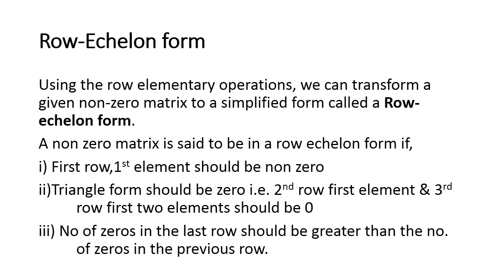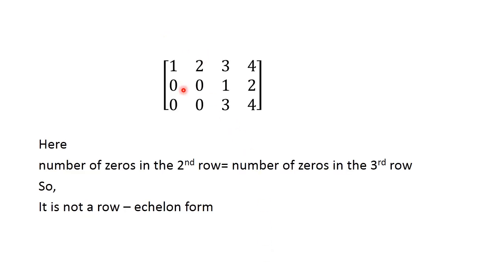See this example: the matrix [1, 2, 3, 4; 0, 0, 1, 2; 0, 0, 3, 4]. The first row first element is non-zero, so the first condition is satisfied. The second row first element is zero and the third row first two elements are zero, so the triangle form condition is satisfied. However, the number of zeros in the second row and the number of zeros in the third row is equal.